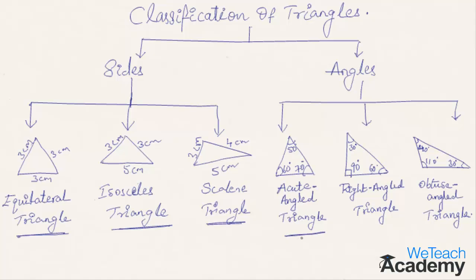An acute angle triangle is a triangle where all the angles are acute. A right angle triangle is a triangle where one angle is a right angle. And an obtuse angle triangle is a triangle whose one angle is obtuse.